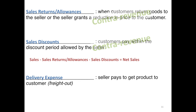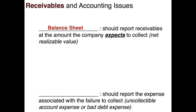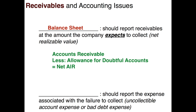Now let's talk briefly about how the receivables you've booked appear on the balance sheet. The balance sheet houses all assets, and receivables are assets. The balance sheet should report receivables at the amount the company expects to collect — this is your net realizable value. If you've booked an accounts receivable, you probably don't expect to collect them all. Sometimes customers aren't going to pay, and we call these doubtful accounts.